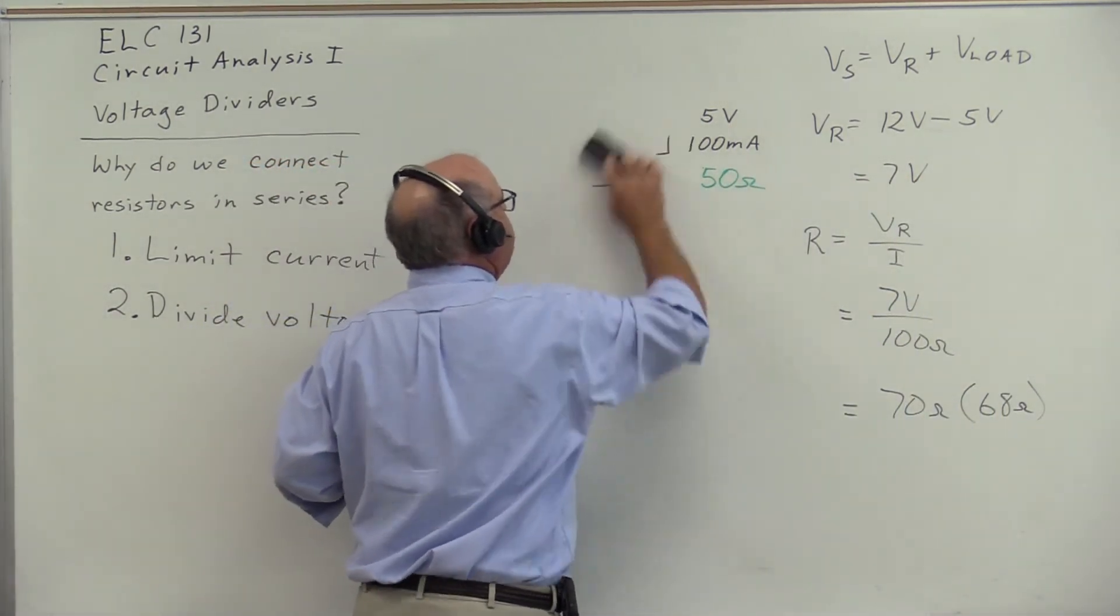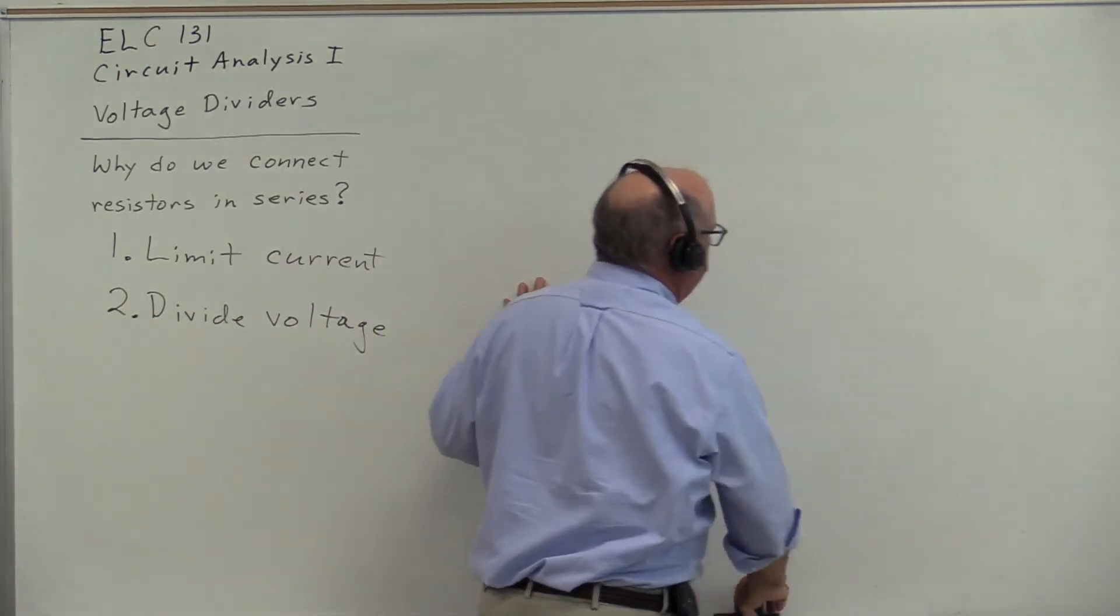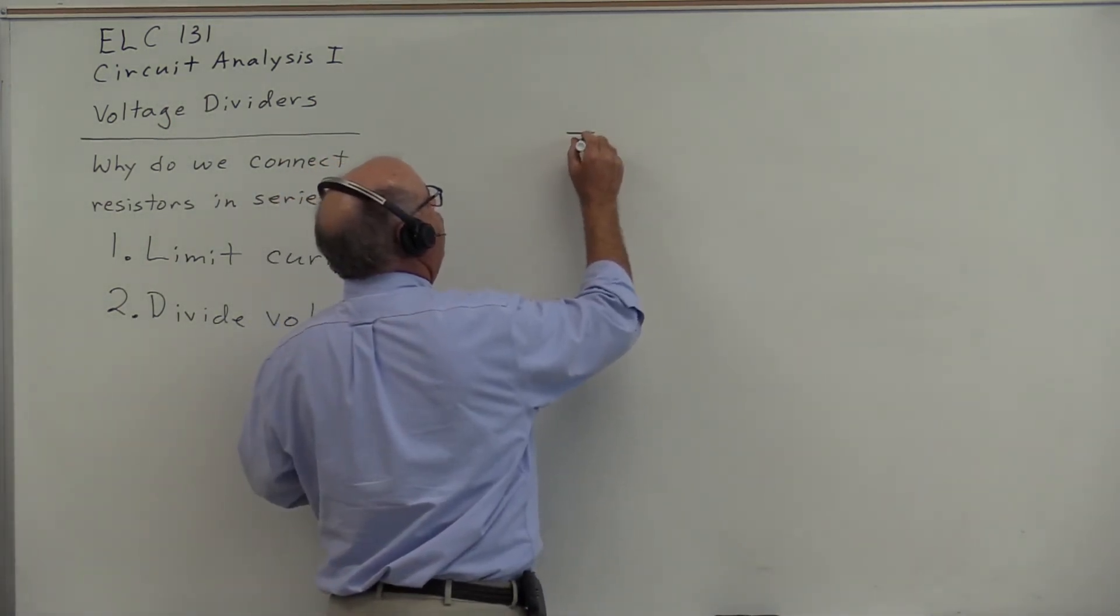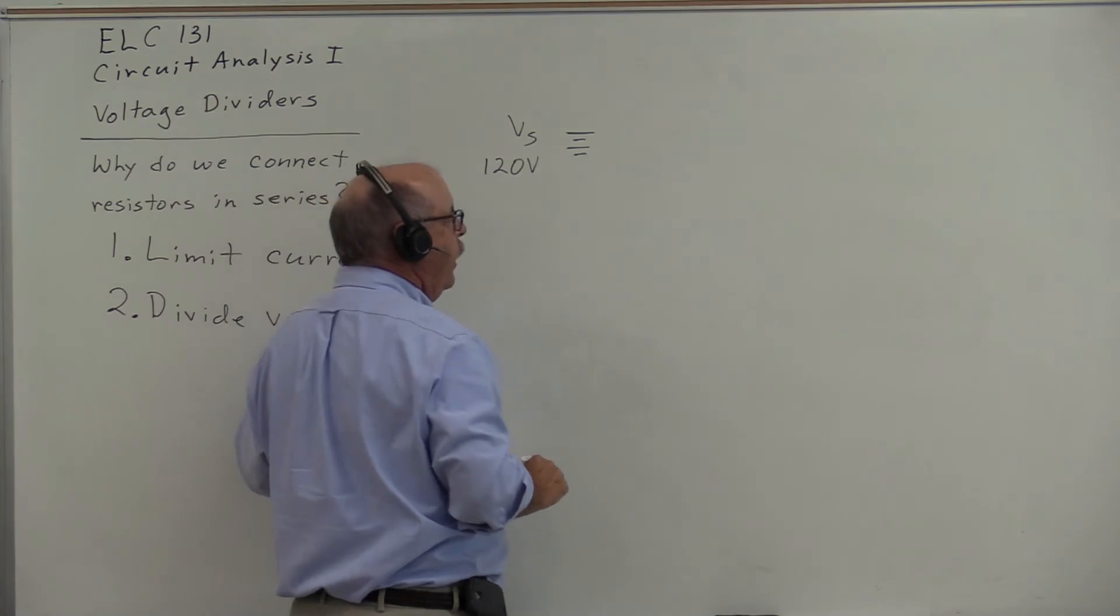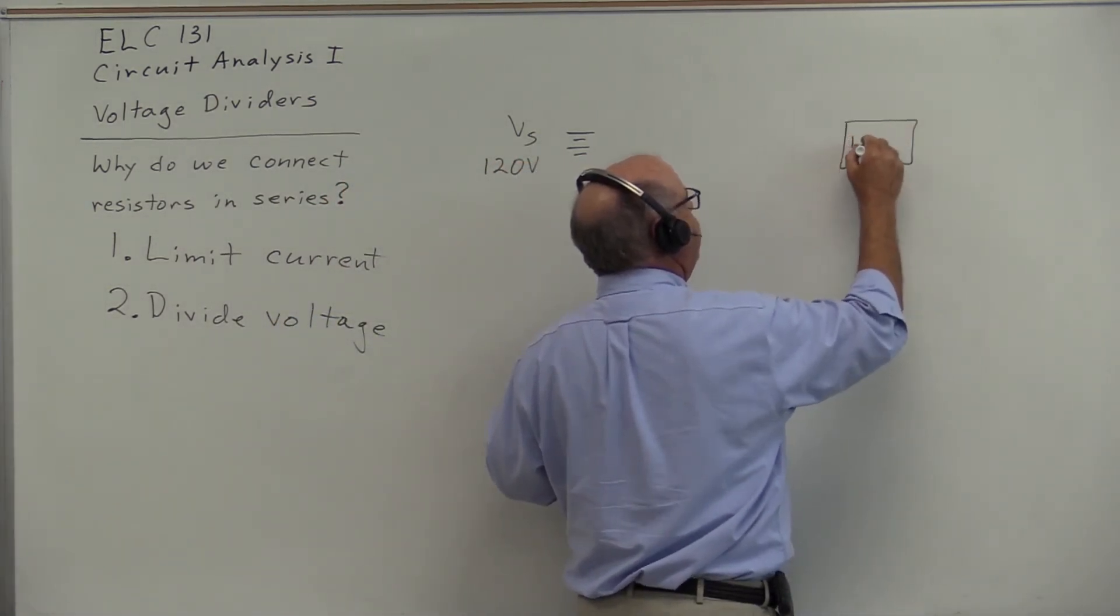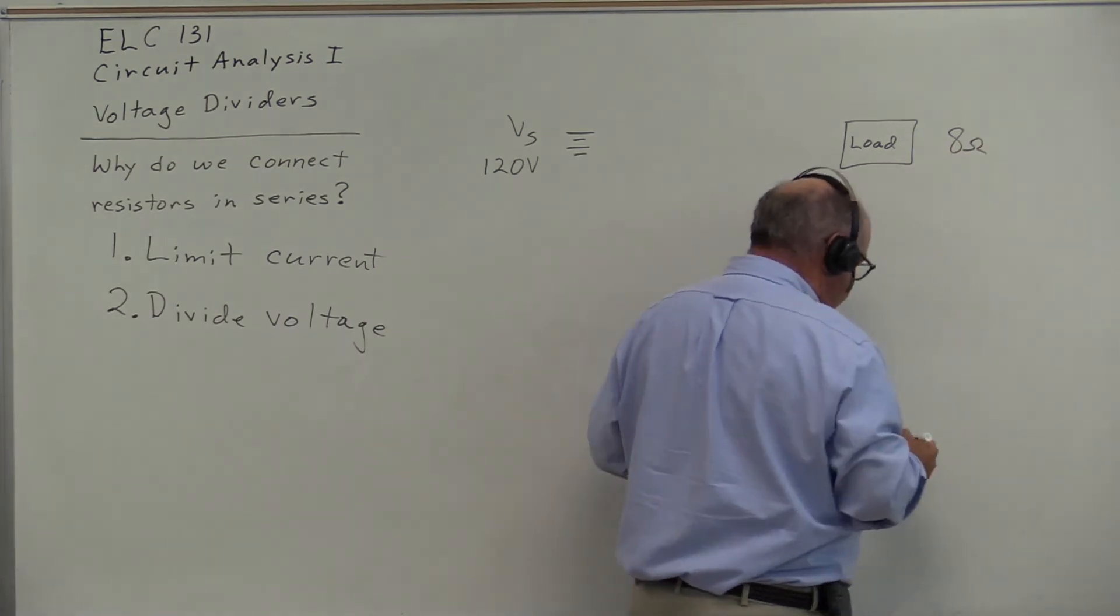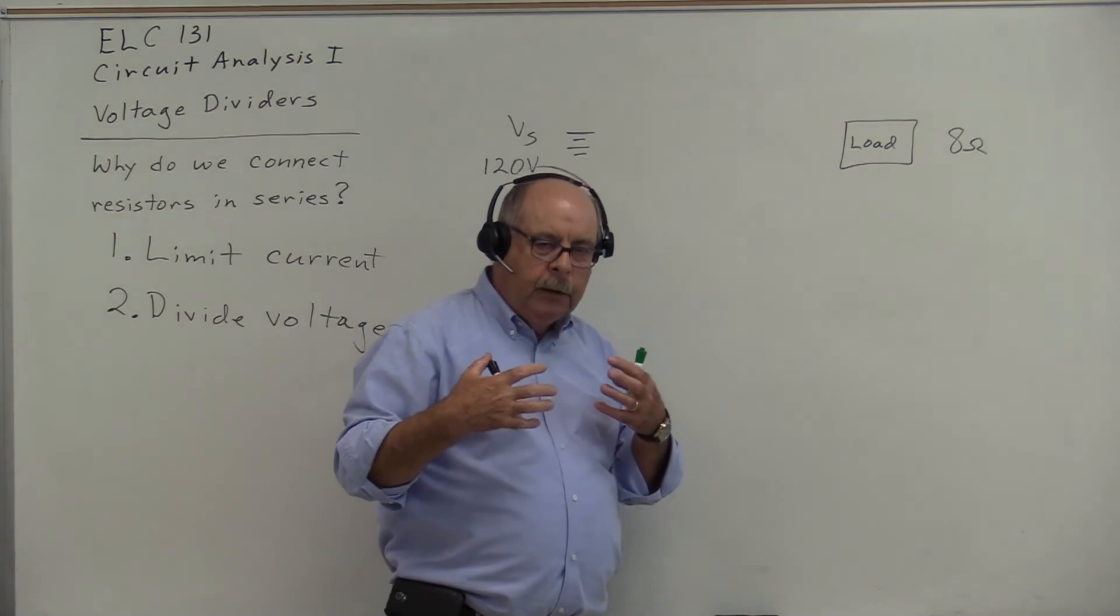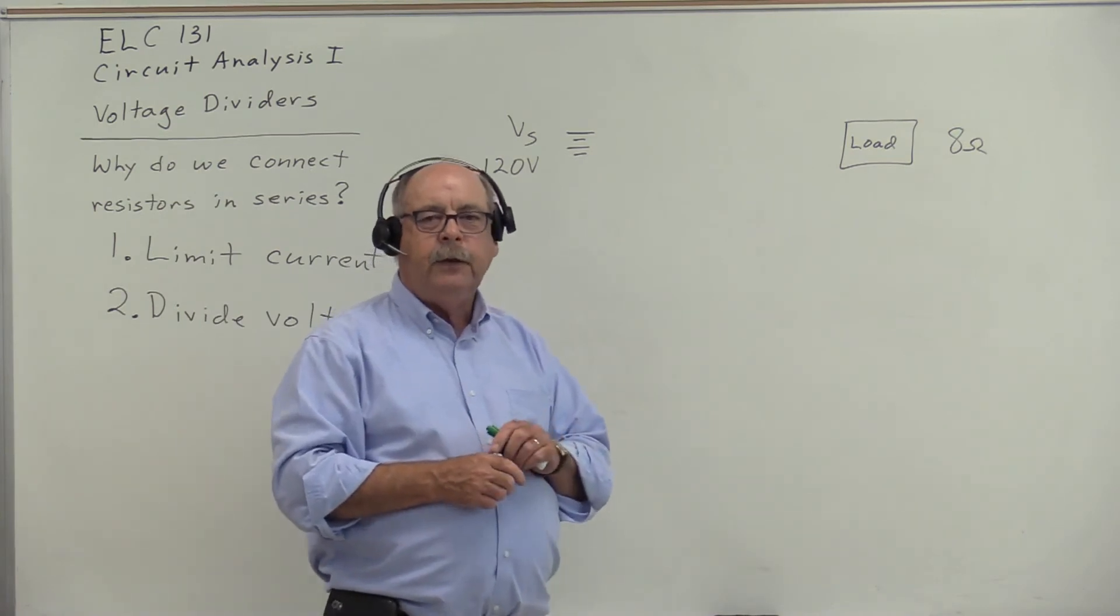Let's look at an example of voltage division that occurs unknowingly. I have a 120 volt source, such as we commonly have in our households, and way over here I have a load that has a value of 8 ohms. This load could be a motor, a heater, or incandescent lamps. My load has a resistance value of 8 ohms.